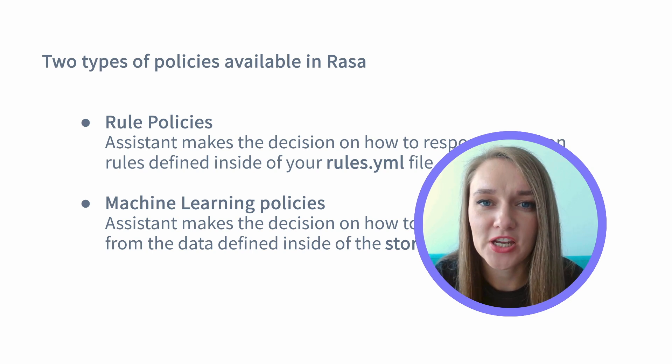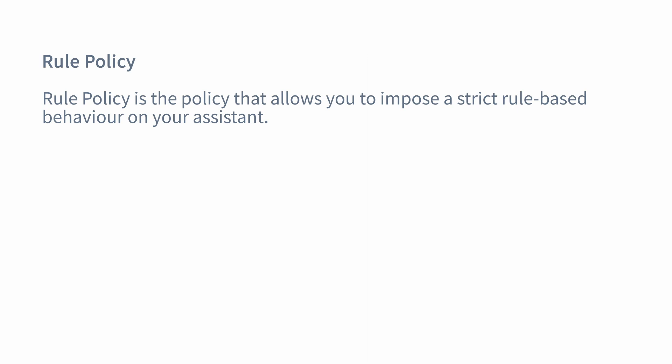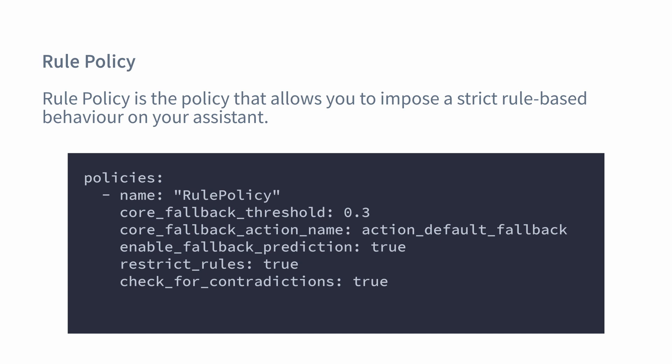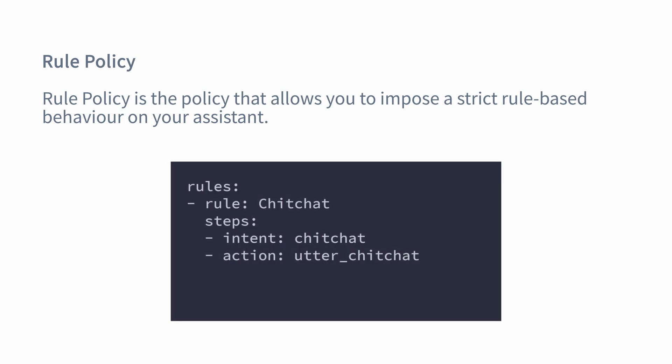Now let's talk about the specific rule-based policies available in Rasa. Rule policy is the main rule-based policy in Rasa open source, used to add specific strict behaviors to your assistant. It learns from rules defined inside the rules.yaml file. For example, you can use rule policy to make your assistant always respond with a specific message when a specific intent is predicted, or to collect specific details before running a specific action — a process called form filling, which will be covered in detail in later episodes. Check out the Rasa documentation to learn more about available parameters for rule policy. Another policy that technically works like a rule-based policy is the memoization policy, which predicts the next best action by matching the conversation with existing stories in your stories.yaml file, with a confidence of one.